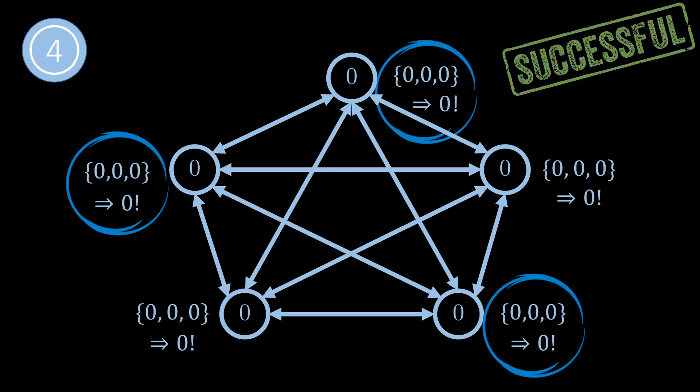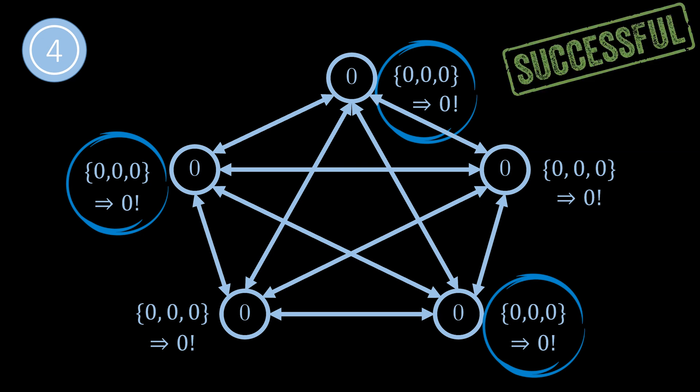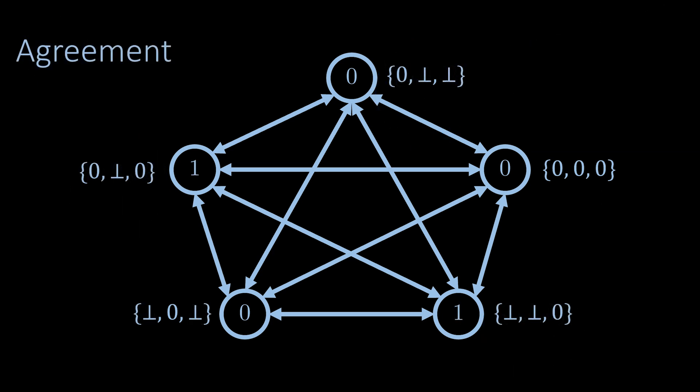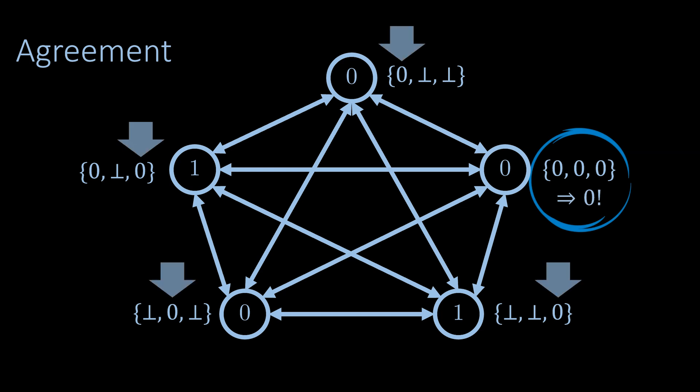Let's now discuss why the algorithm is correct. Starting with the agreement property: why is it guaranteed that nodes can only decide on one value? The reason is that if a node receives a proposal three times, it is guaranteed that every other node gets at least one of these proposal messages, because there are five nodes in total. So in this situation it is clear that all nodes set their value to the value in the proposal, and it is clear that this value will be the final value.